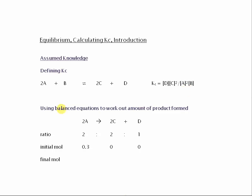I'm also assuming that you can use balanced equations to work out the amount of product formed in a reaction. Not an equilibrium reaction, just a regular reaction. If we've got 2A goes to 2C plus D, then that's a 2 to 2 to 1 ratio.